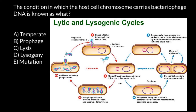But at a certain moment — for example, under the influence of stress factors such as ultraviolet radiation, temperature, or absence of food — this prophage can excise itself, and the cell may enter the lytic cycle. So we have the lytic cycle and the lysogenic cycle.